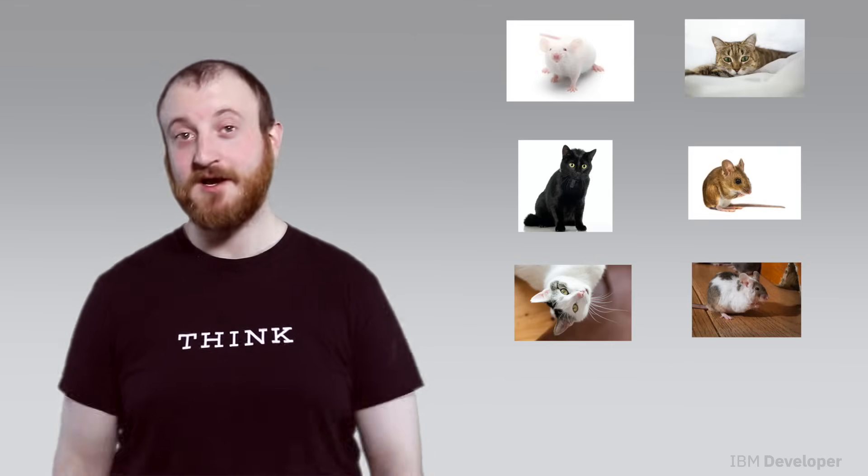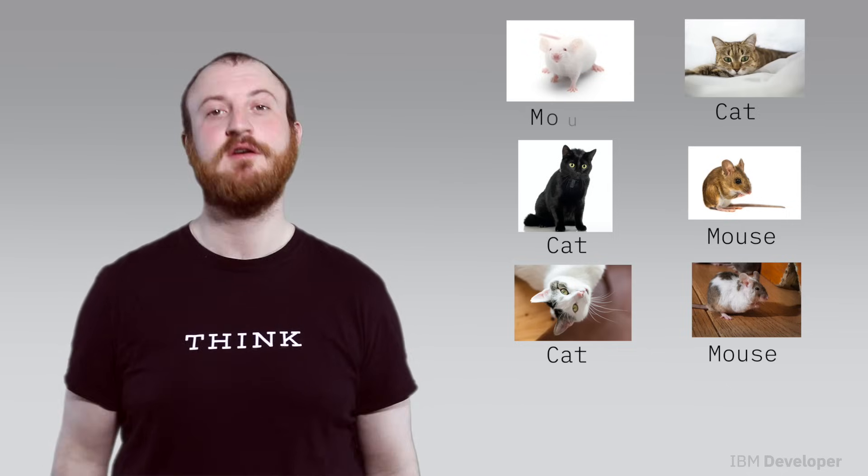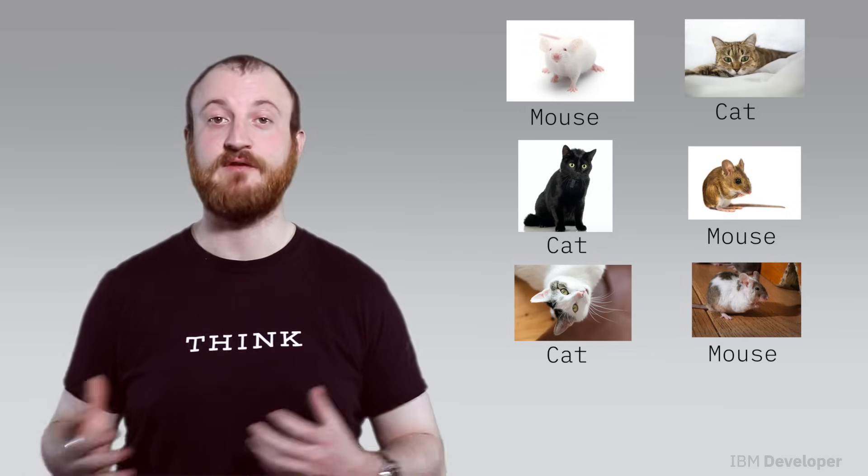So, if I had a bunch of images of cats and mice, a person would need to sit down and label each image as either a cat or a mouse, so that the machine learning algorithm could learn the difference between those examples.